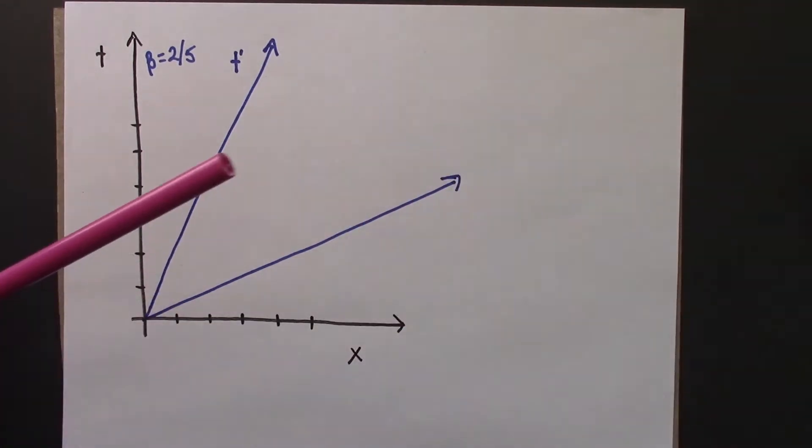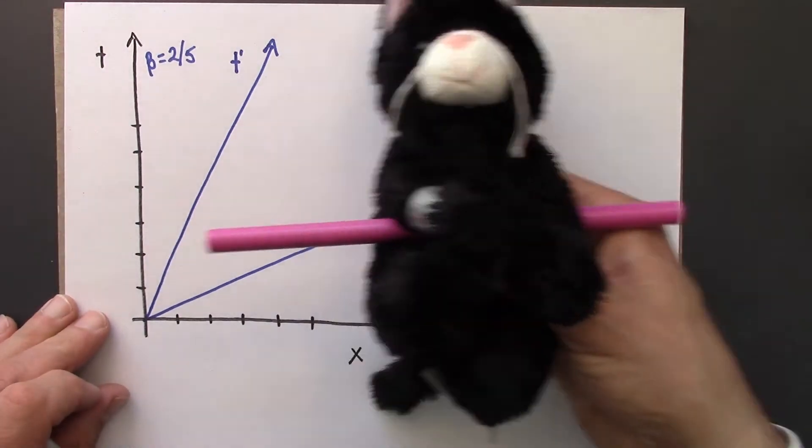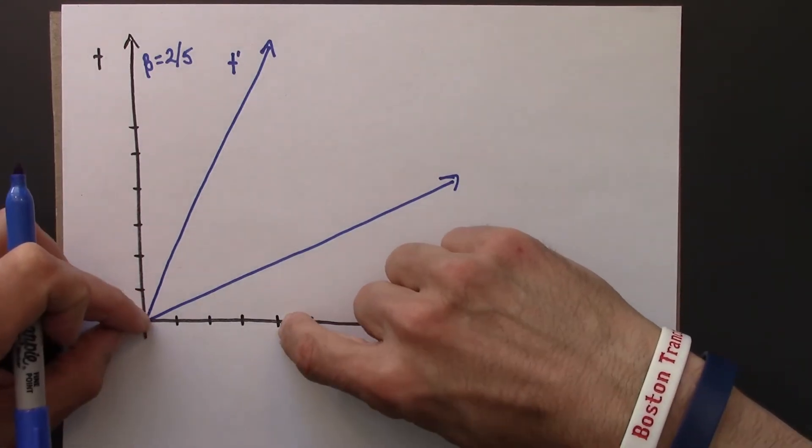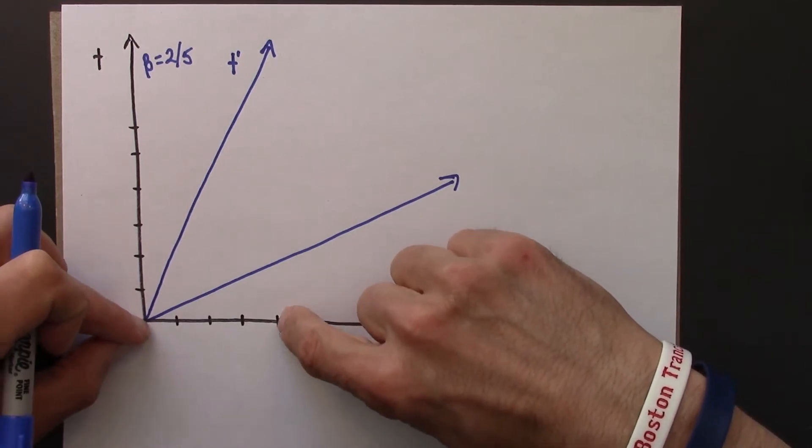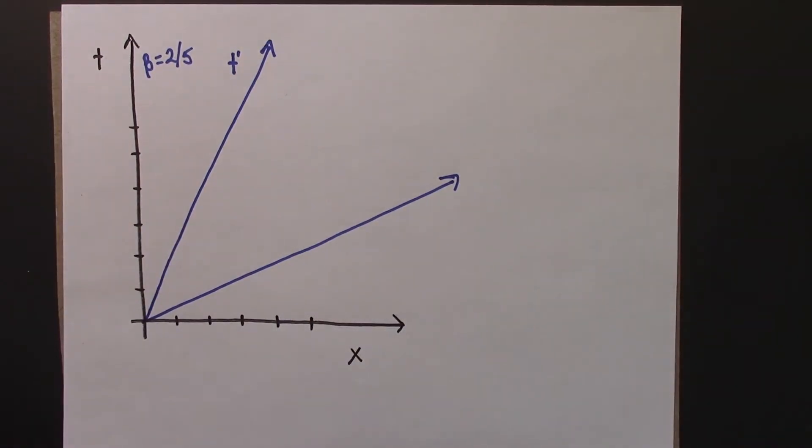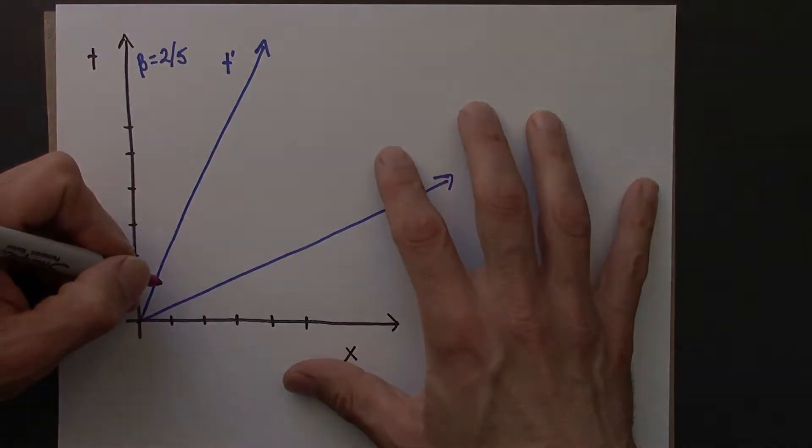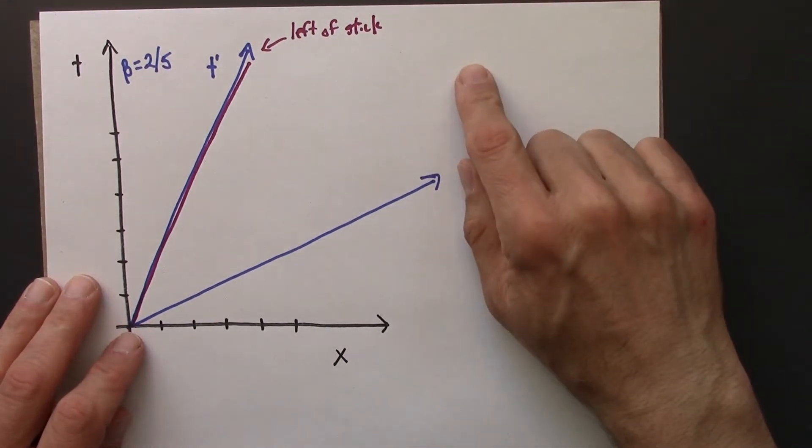So now the stick is moving along with Beowulf, and so the world line for the stick is, or the ends of the stick, will be here at 1 and at 4. So let me draw this rather than trying to say it, and I think it will be okay. Alright, so let's see here. I'm going to have this. Alright, so that's the left of the stick. We're going to have to think a little bit about the right of the stick.